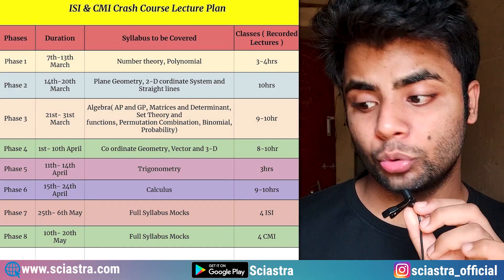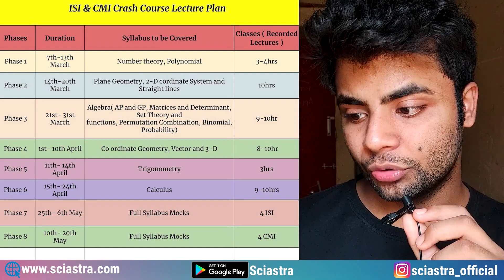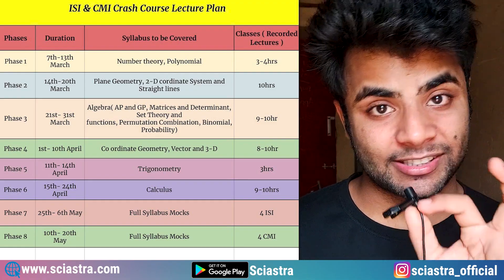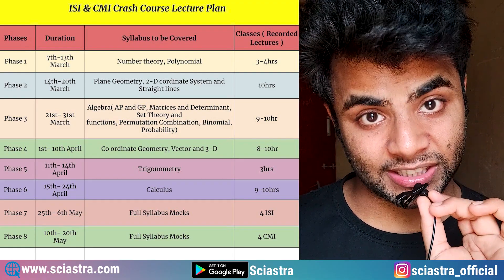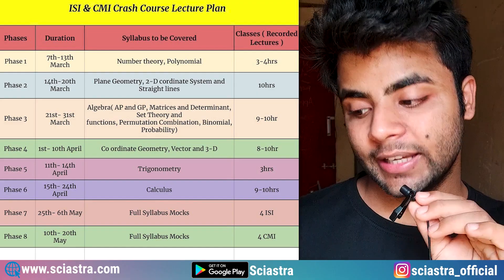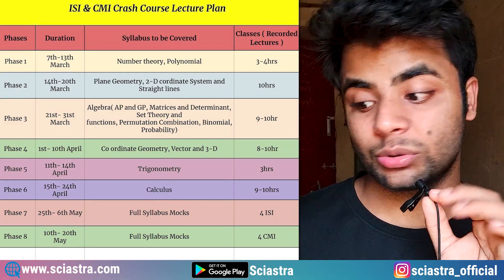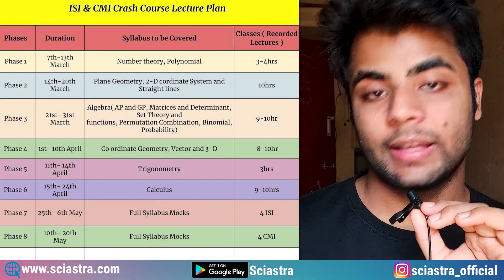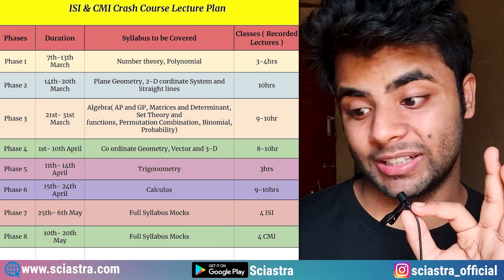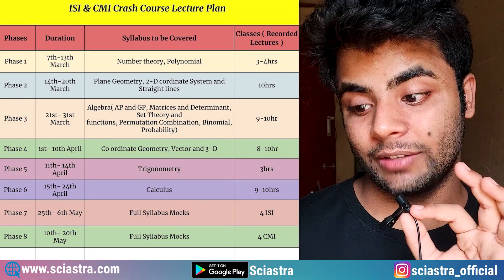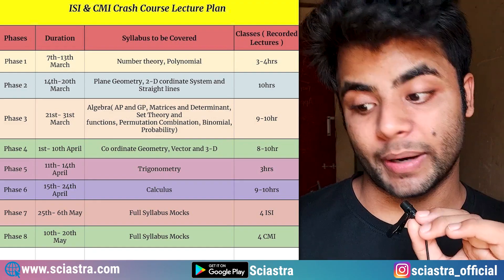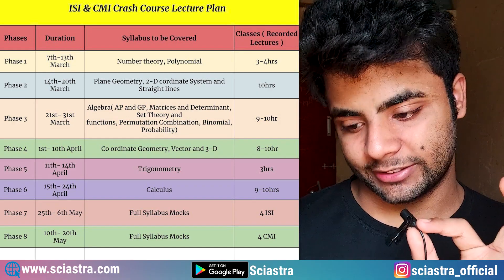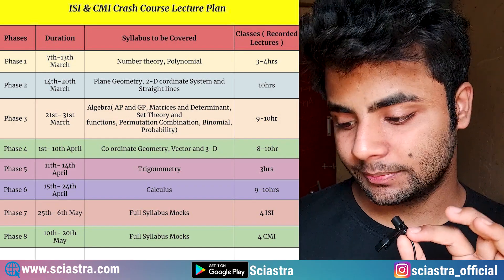Phase 2, 14th to 20th March — Plane Geometry, 2D Coordinate System, and Straight Lines will be covered, with 10 hours of lecture total. Then, 21st to 31st March, we will cover Algebra, AP-GP, Matrices, Determinants, Set Theory, Functions, Permutation and Combination, Binomial Theorem, Probability, etc. — 9 to 10 hours of lecture.